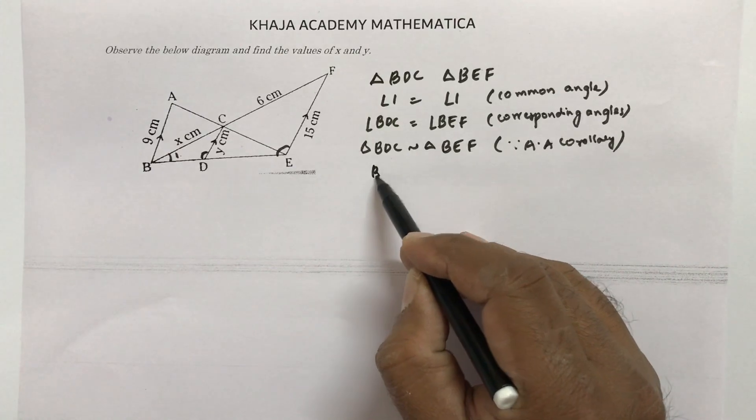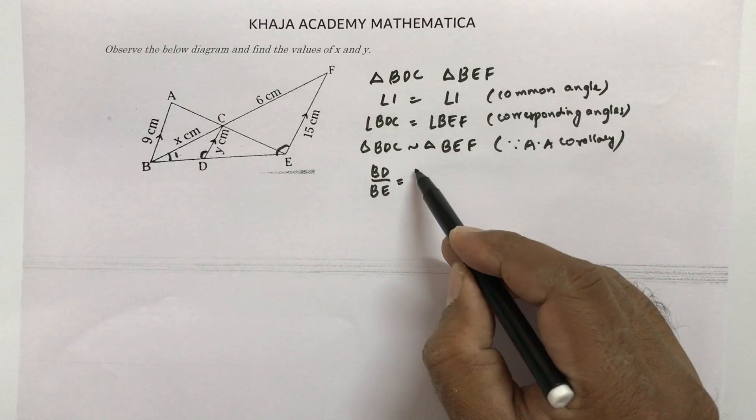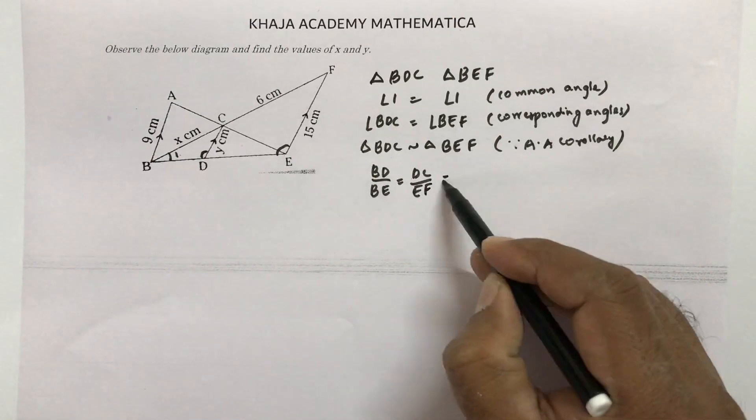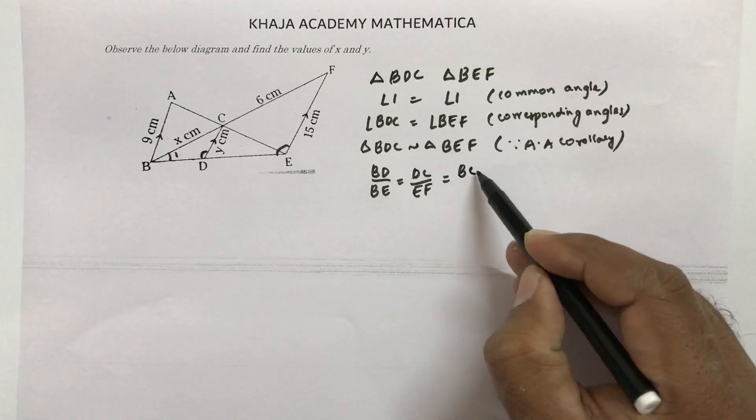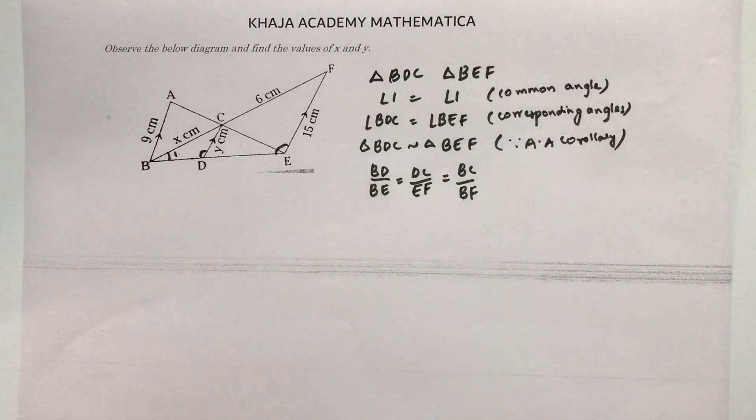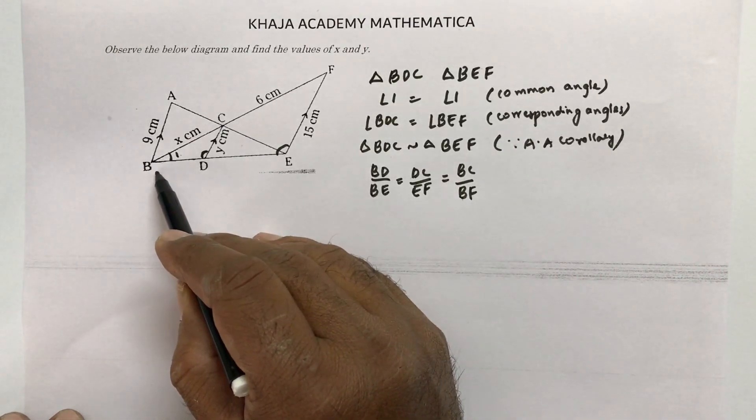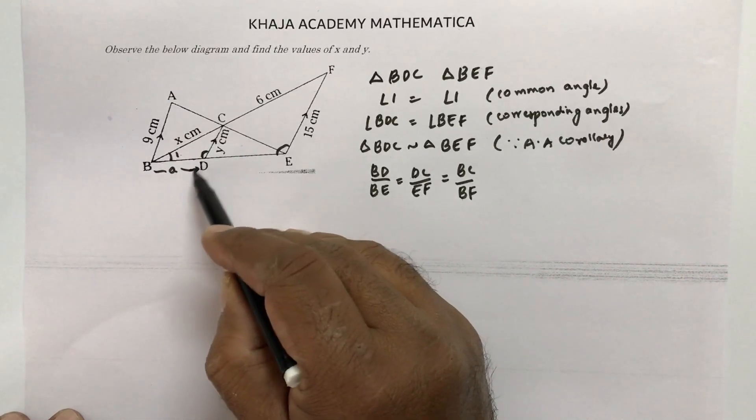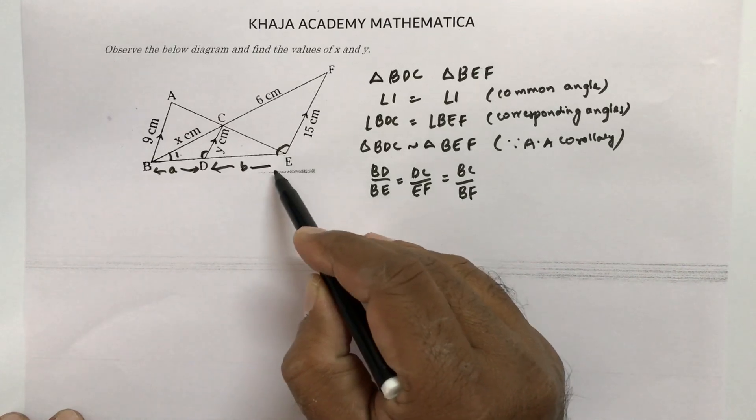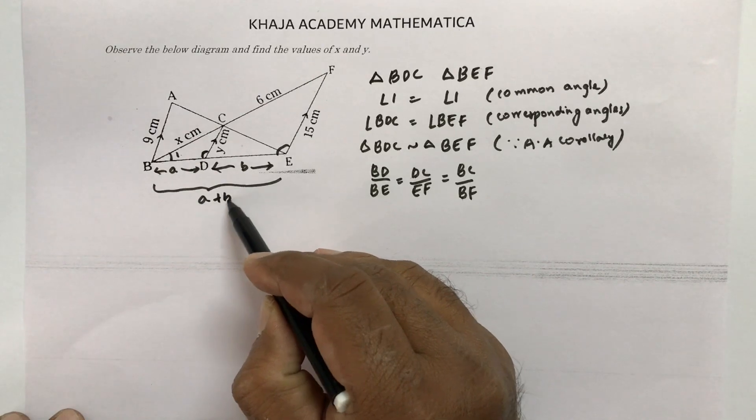So here BD by BE equals DC by EF. Now with the help of diagrams, we will substitute the values and before that here BD you can consider it as A, and DE you can take it as B. So this total will be A plus B.